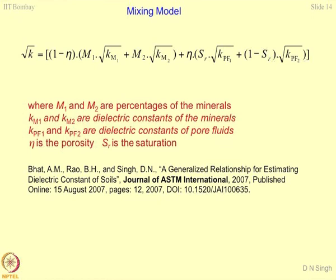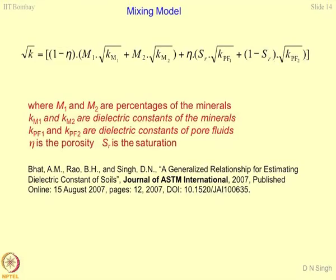Vv over capital V is the porosity term, so volume of voids equals porosity multiplied by total volume. This is the volumetric form in terms of saturation of water — your saturation term for pore fluid 1 and pore fluid 2, representing the superimposition effect of pore fluid 1 on pore fluid 2. If you are working with soil having multiphase minerals and multiphase pore fluids, this term gets further expanded to include K_M1, K_M2, K_M3 and K_PF1, K_PF2, K_PF3, K_PF4.